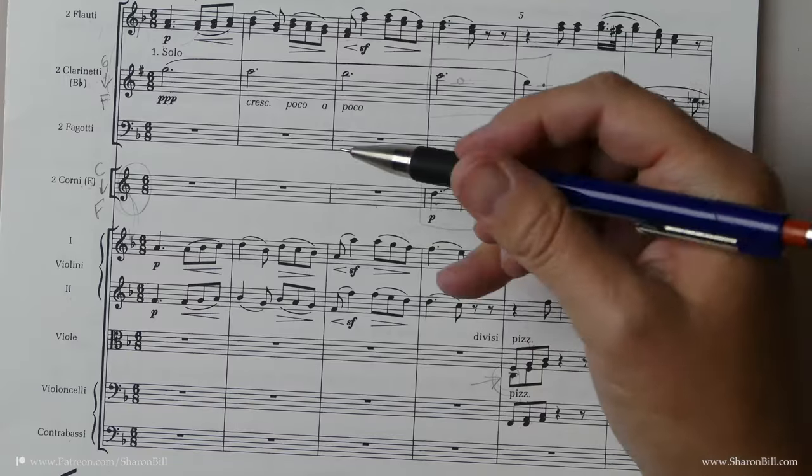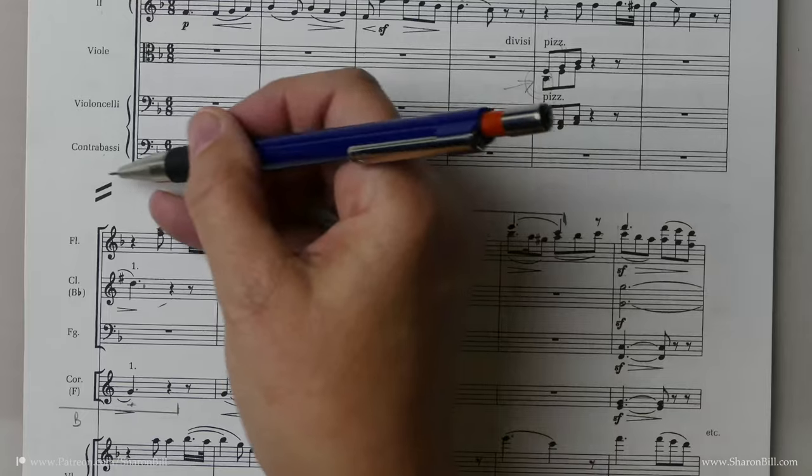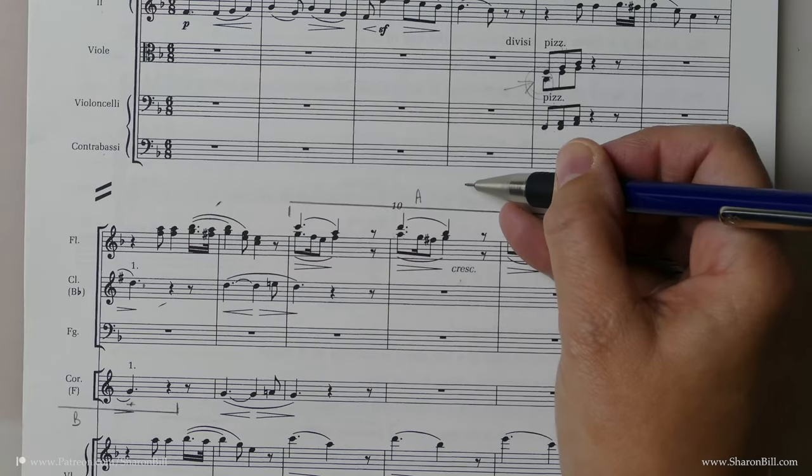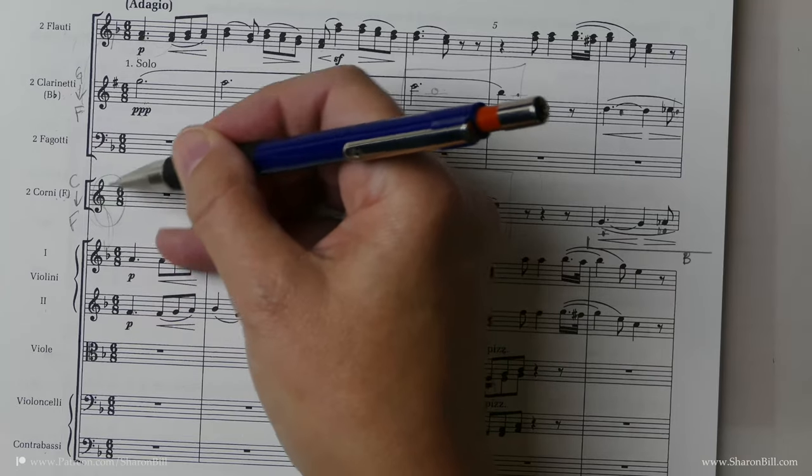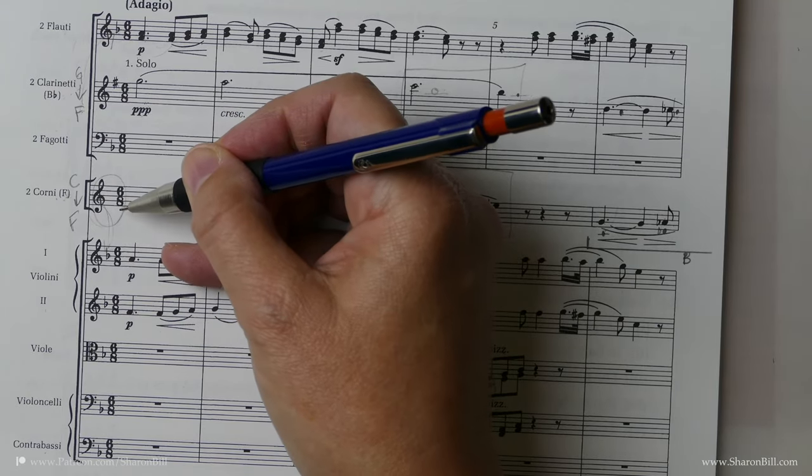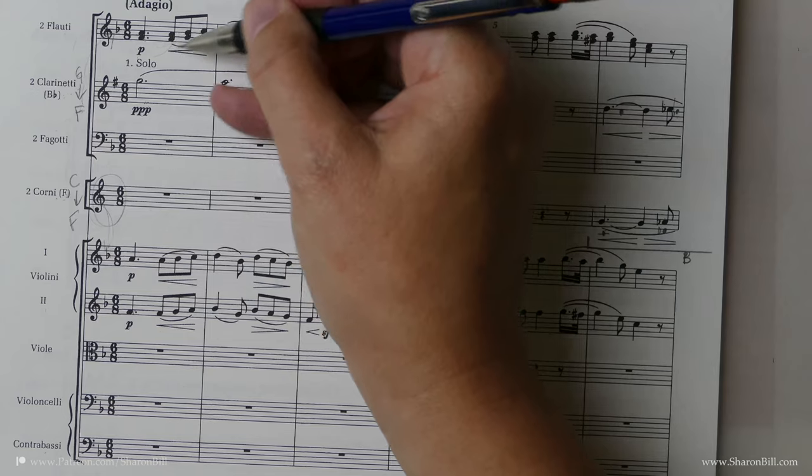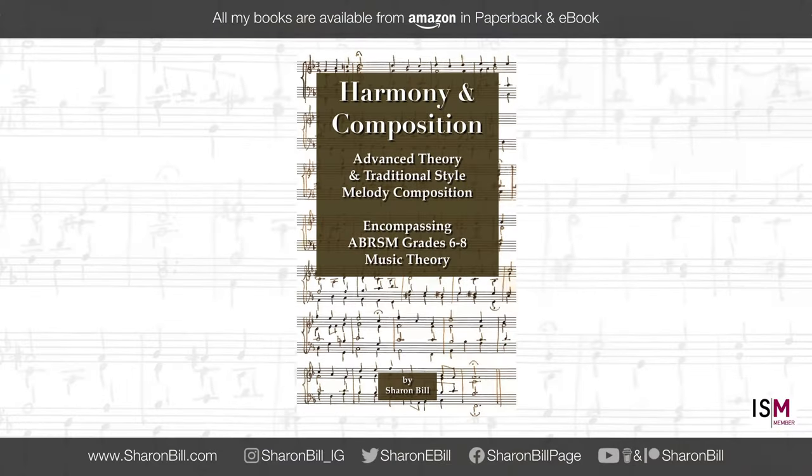And so if it was a Baroque piece, you would expect to see an orchestral continuo with figured bass. You wouldn't see horns like this either. And you wouldn't see flutes like this.